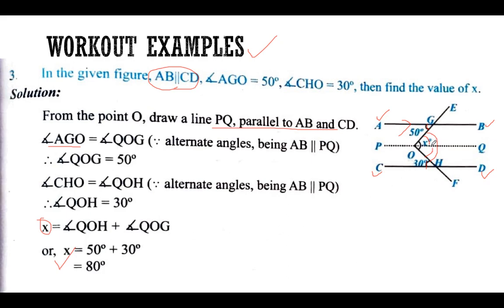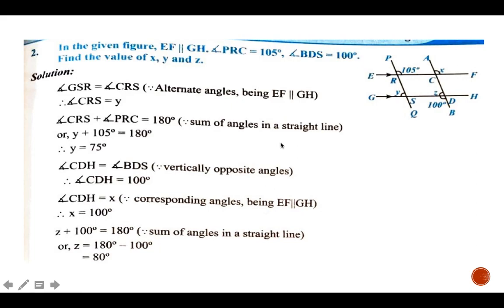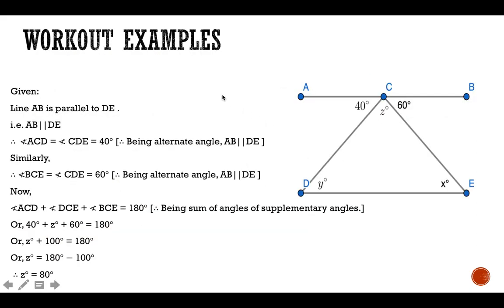So we can find the value of x: 50 plus 30 equals x. In another approach, 105 equals this angle by vertically opposite angle, and then 105 plus y equals 180 degrees by co-interior angle. In that way we can solve this.